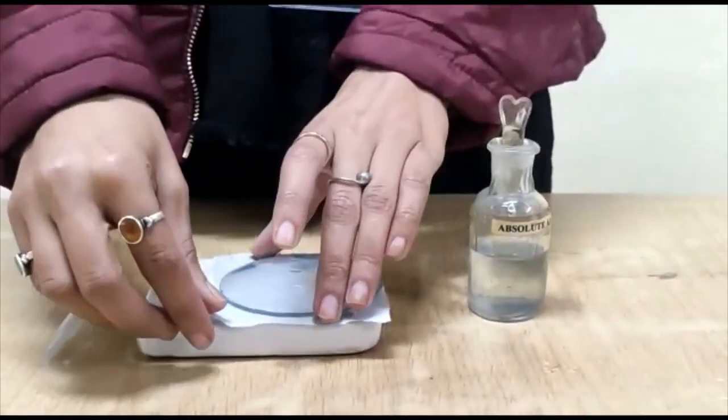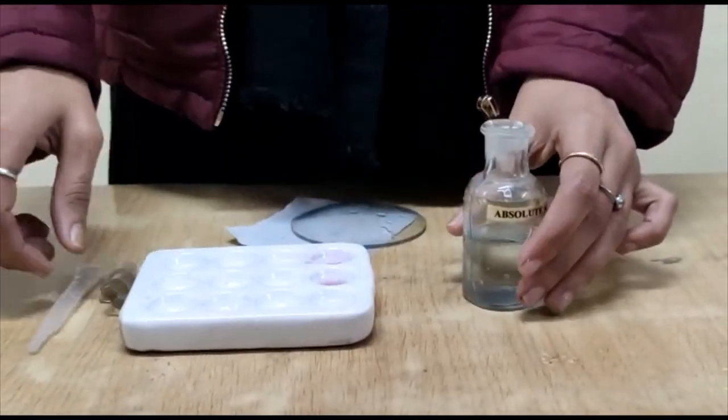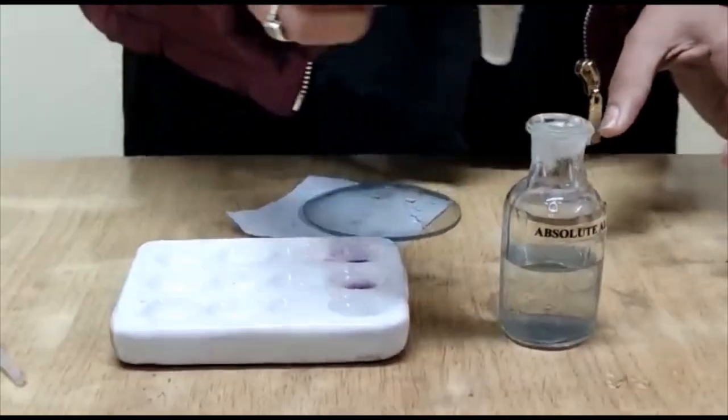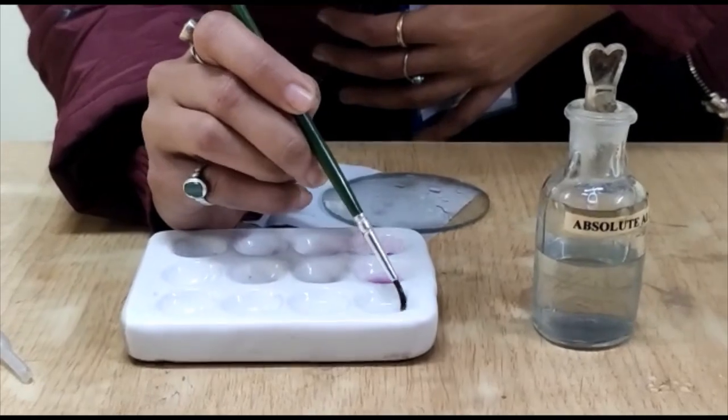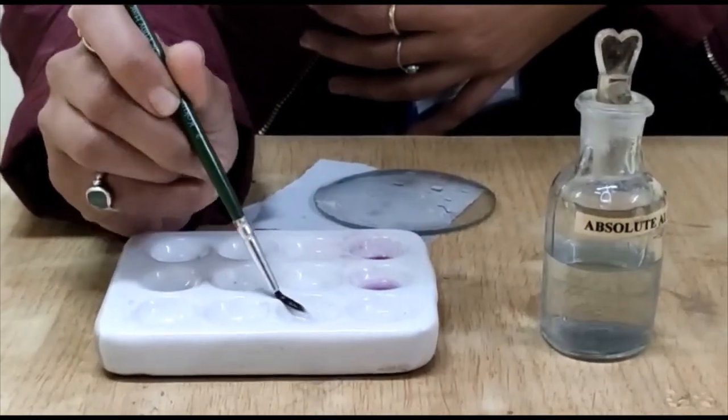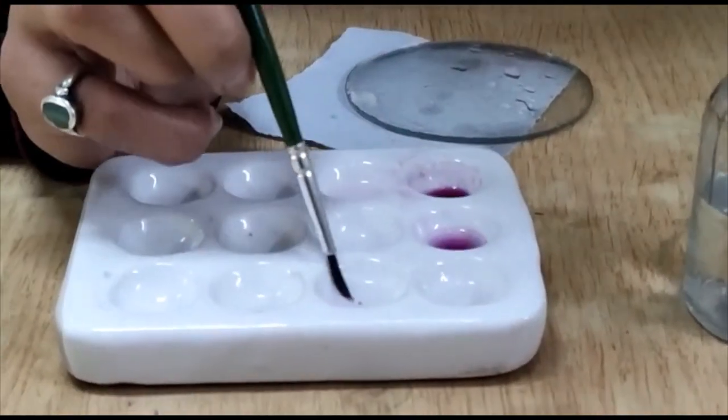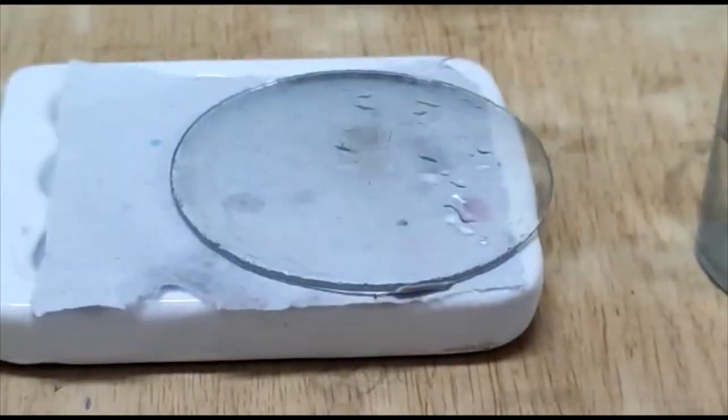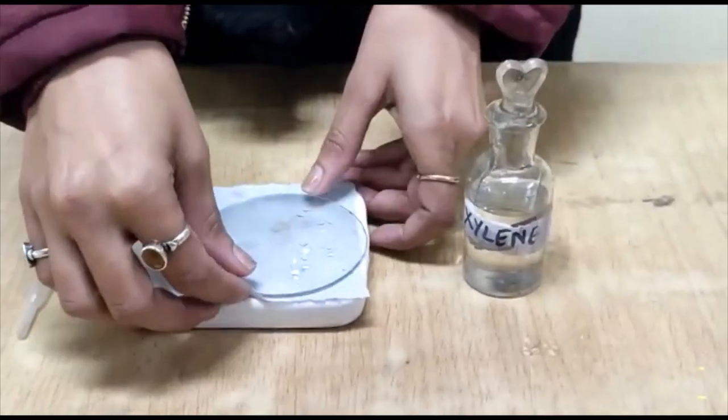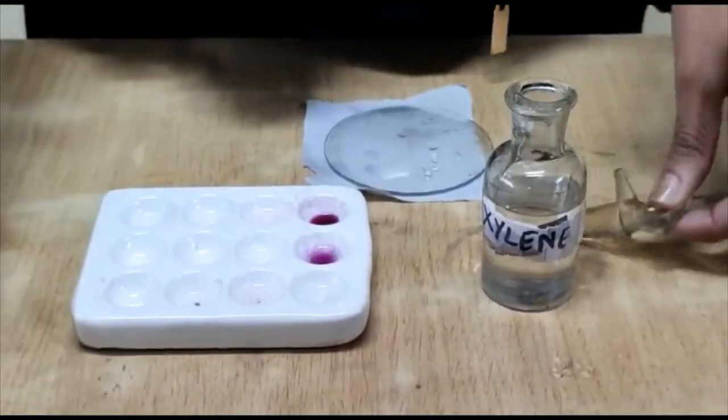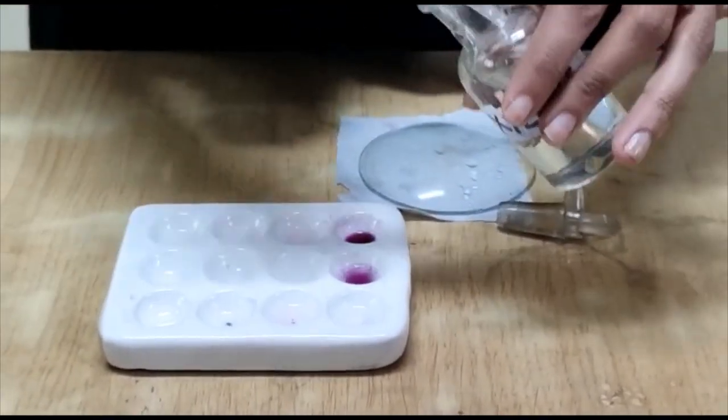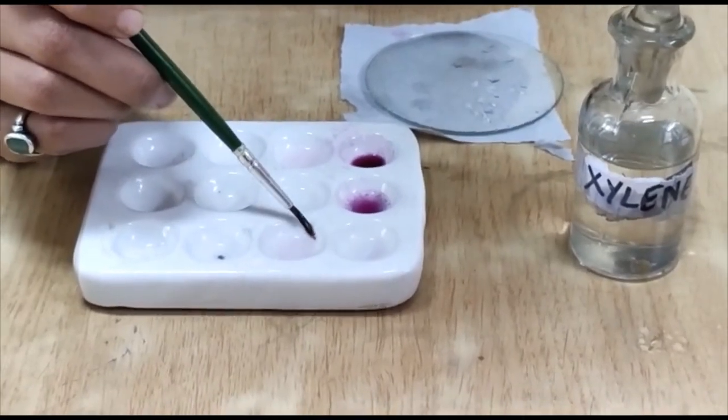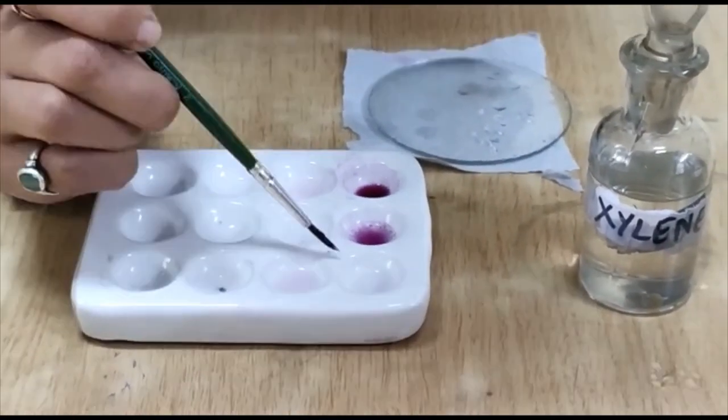Finally, we take out the gemmules and we transfer them to the absolute alcohol. You can see here, these are the gemmules. Now wait for 5 minutes. Now we take xylene in the next chamber and transfer the gemmules into the xylene and wait for 5 minutes.